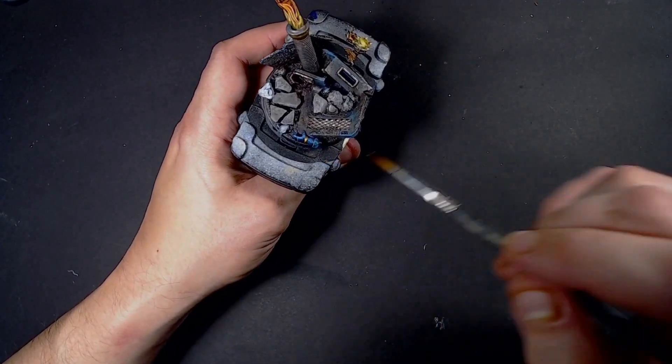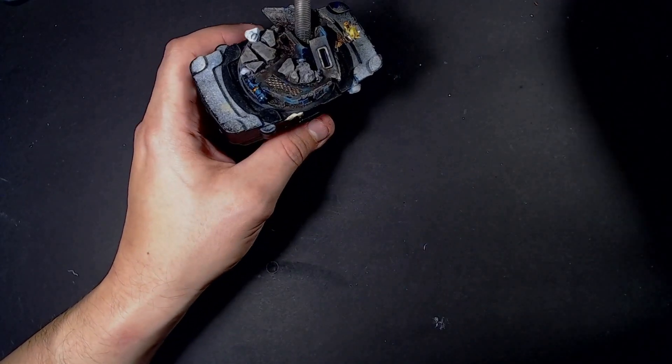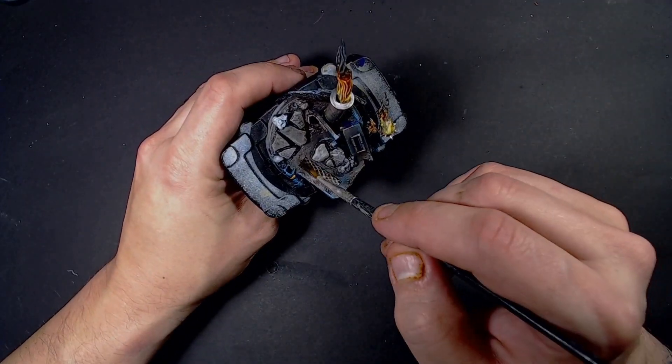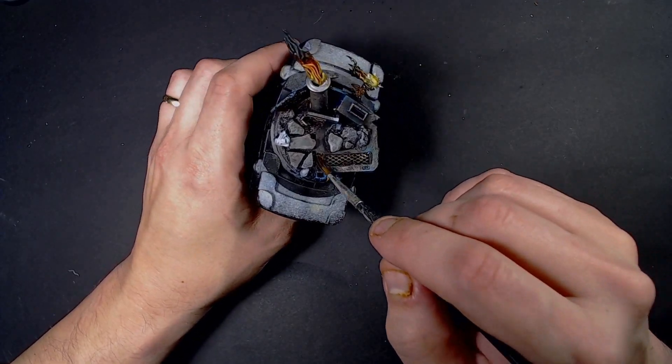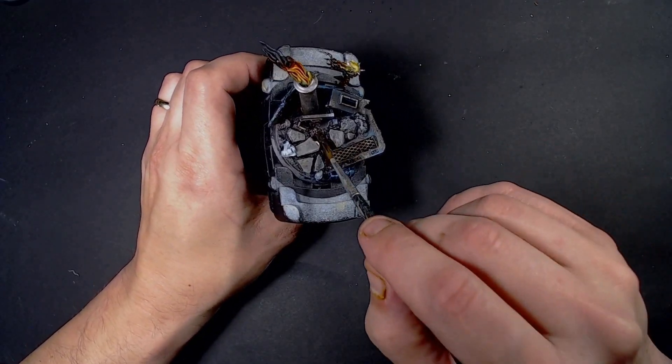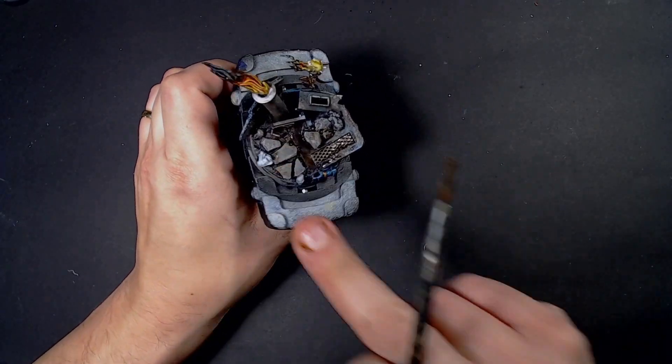Now that that is drying, we start putting some Agrax Earthshade here and there, especially where we want a little bit of definition or a little more dirt. So in the grains, in the grids, on the hand, on the ground, everywhere mostly, on the rocks. If it goes a little bit too much on the rocks, you can just wipe it off immediately.